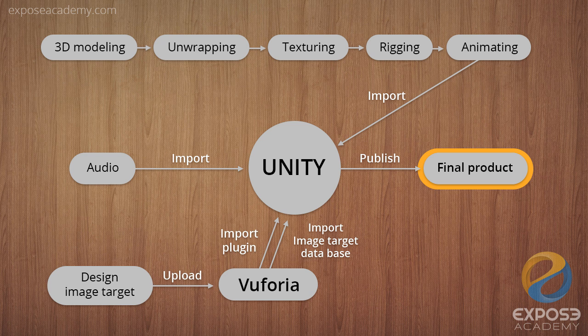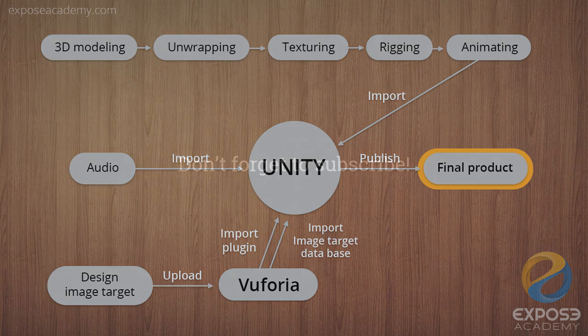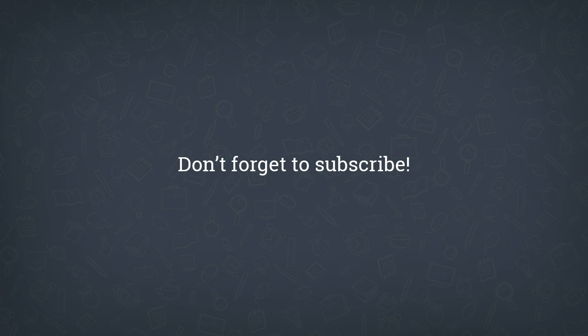So that is the general workflow of how you build an augmented reality product. Of course, there are alternatives to Blender, Unity, Vuforia, and Adobe Illustrator, but since these are the tools that we use and know, we'll be covering only these tools — except Adobe Illustrator. See you in the next part of the video where we will start using Blender to create the 3D model, inshallah. Thank you for watching. Don't forget to subscribe. Wassalamualaikum.